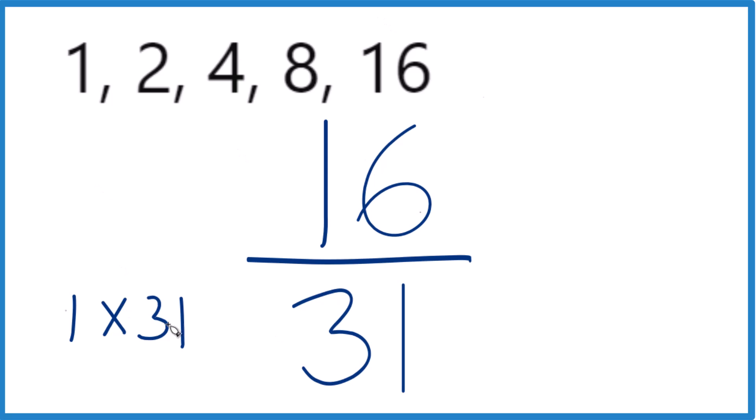So when we try to find a common factor, the only common factor is 1. That's the greatest common factor for 16 over 31.